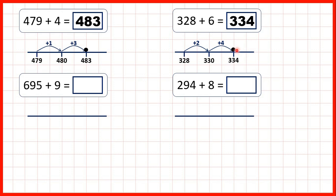Here I've used a number line, but you might be able to work these questions out mentally — so without needing to use a number line, using mental methods instead. And the easiest way to do that is to think: how many more to get to the next multiple of ten, so here to 330, and then how many do I need to add after that?